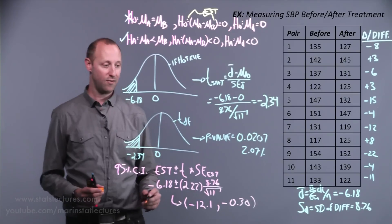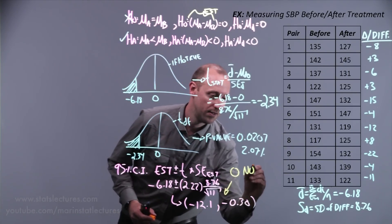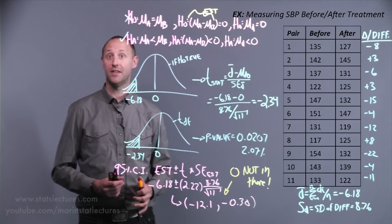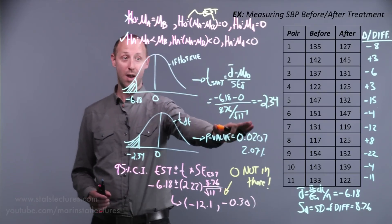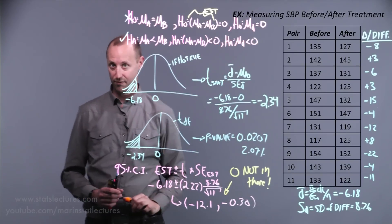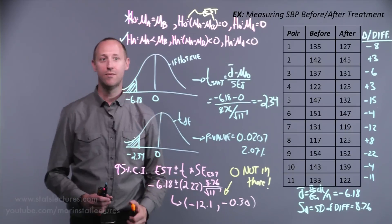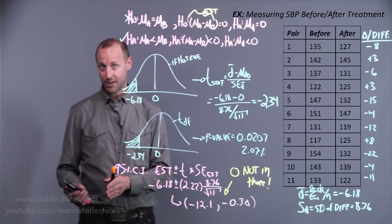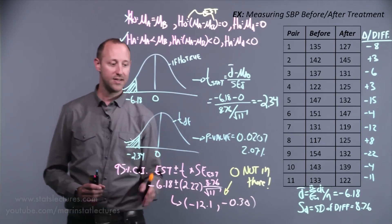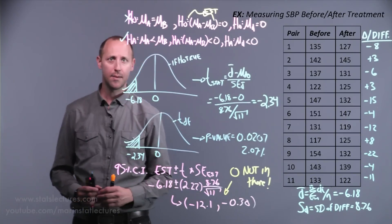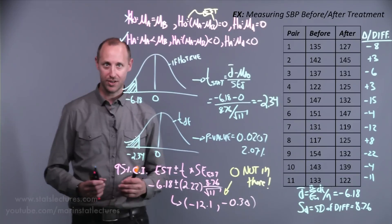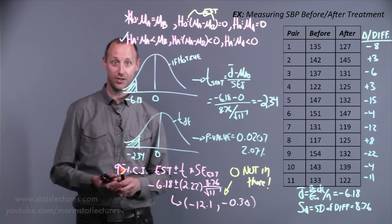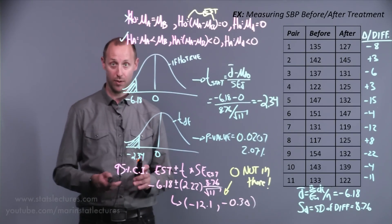Notice that zero is not contained in this confidence interval. This tells us we're not willing to accept that the difference may be zero, which falls in line with our hypothesis test where we had evidence that the change is significantly different from zero. Since all the values in the interval are negative, we're fairly confident there is a decrease. This also brings up a reminder about statistical significance versus scientific or clinical significance — a decrease of 12 units in blood pressure is probably meaningful, but a decrease of only 0.3 units may or may not be clinically meaningful.